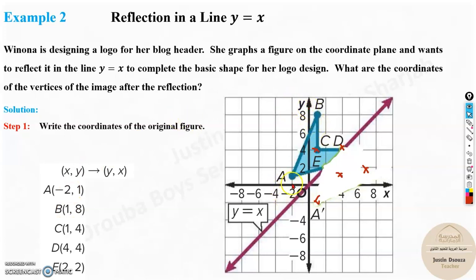The coordinates are not mentioned in the diagram, but note down the coordinates of the given figure first. A is -2, 1. B is 1, 8. C is 1, 4. D is 4, 4. And lastly, E is about 2, 2.